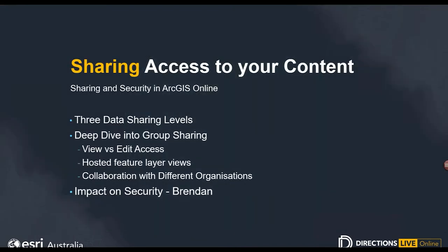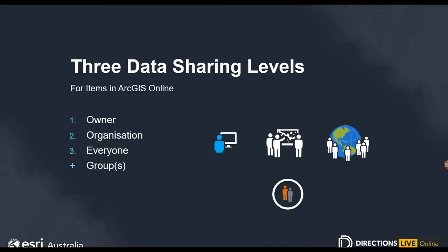That's so powerful to see that 3D dataset in a truly global sense — not only major metropolitan centres, but also smaller regional centres right across the country. It's global coverage from day one. We've now reached the third and final major component of the presentation, which is all about sharing access to your content. We're going to tackle this by first highlighting the three different data sharing levels available in ArcGIS Online: private, organization, and public access for everyone. Group sharing is a complementary fourth option that we'll give extra attention to.